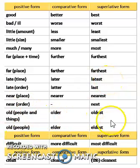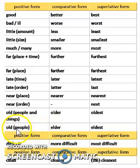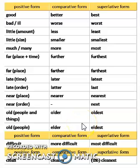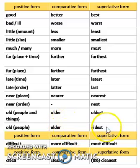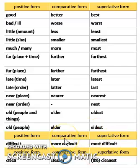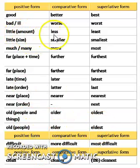Old, older, oldest — that is fine and is used for people or sometimes things. But if it is used for people specifically, like brothers or sisters or parents, then you will not say older or eldest. If it is used for human beings, you will use old, elder, eldest. For example: he is the elder brother and he is the eldest son. Then little, less, least.